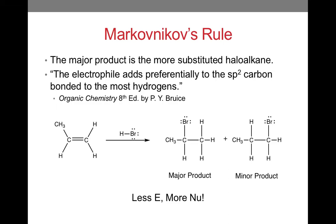You might have noticed that the previous example was a symmetrical alkene. What happens when there is an asymmetrical alkene? For these, we consult Markovnikov's rule. Markovnikov's rule basically says that the product we will get from this reaction is the more substituted haloalkane. The electrophile adds preferentially to the sp2 carbon bonded to the most hydrogens. We can remember this as 'less E, more Nu,' meaning that the less substituted carbon will get the electrophile, and the more substituted carbon will get the nucleophile.